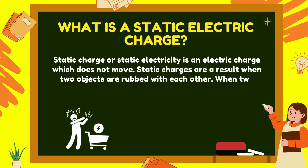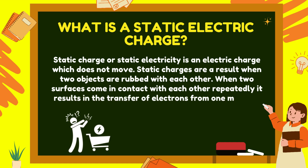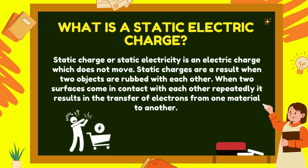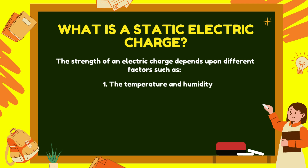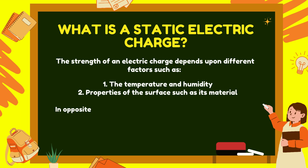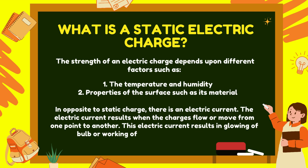Static charges result when two objects are rubbed with each other. When two surfaces come in contact repeatedly, it results in the transfer of electrons from one material to another. The strength of an electric charge depends on factors such as temperature, humidity, and properties of the surface. In contrast to static charge, there is electric current, which results when charges flow from one point to another — enabling the glowing of bulbs and working of electrical appliances.